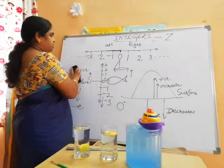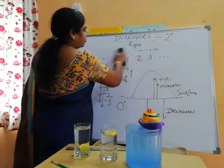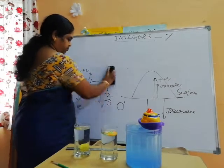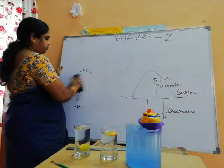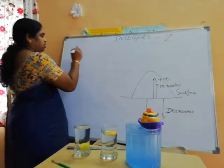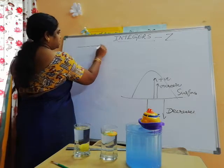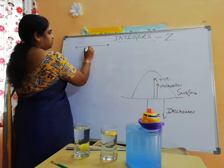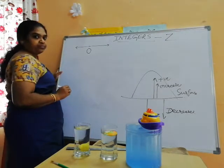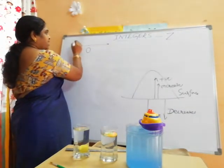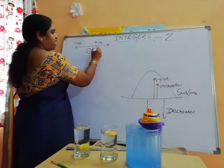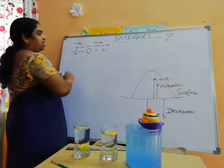Let us see some more examples of integers and recall what these numbers are. When you draw the number line of integers, first mark zero. This zero divides the number line into negative and positive — to the right side of zero we have positive values, to the left side of zero we have negative values.